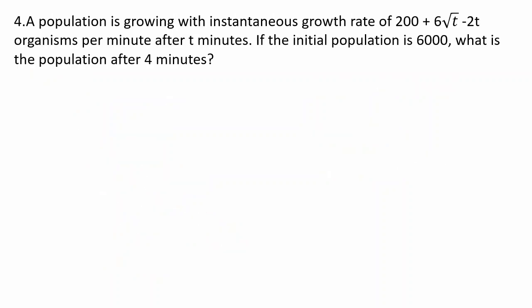A population is growing with an instantaneous growth rate of 200 plus 6 square root of t minus 2t organisms per minute. If the initial population is 6000, what is the population after 4 minutes?